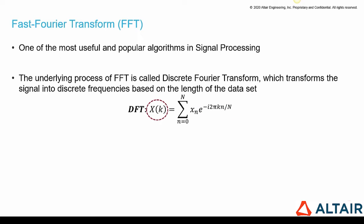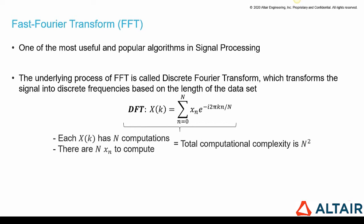And x of k is another sequence of complex numbers with a frequency representation of the time domain signal. We can notice that each x of k has n computations and there are n xn to compute, meaning that the total computational complexity is n squared. With FFT algorithm, the computational complexity drastically drops from n squared to n times log n.